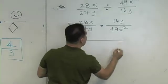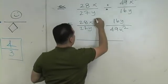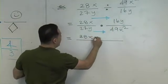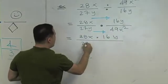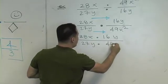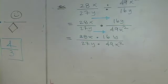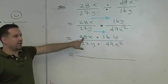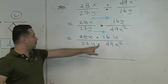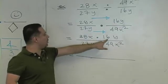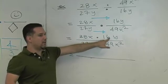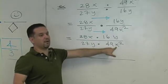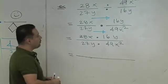Remember, don't actually multiply. Instead, break everything down. Break 28 down, break 27 down, break 16 down, break 49 down. Can you break x or y down? No — they're already prime in a sense. Can you break x squared down? Yes: x times x. So let's break everything down.